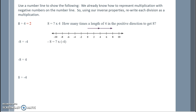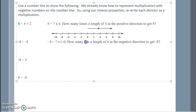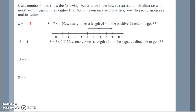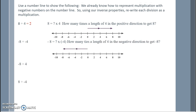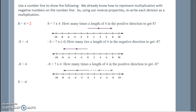Negative 8 divided by negative 4 is the same as: negative 8 equals how many times a length of 4 in the positive direction to get negative 8? We need to go in the negative direction 2 times so that we get negative 8. Negative 8 divided by 4: negative 8 equals how many times a length of 4 in the positive direction to get negative 8? We would go in the positive direction, however we need to get to negative 8, so we think the inverse — negative 2.